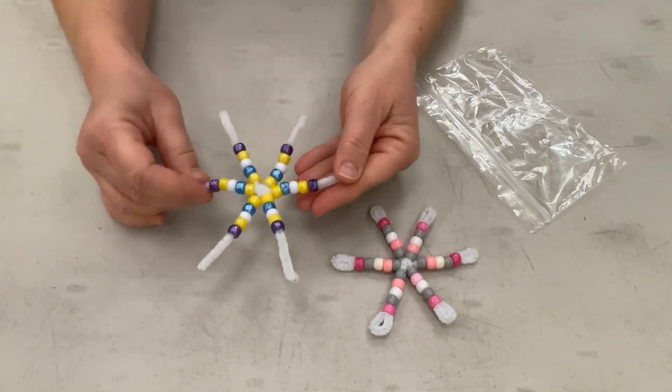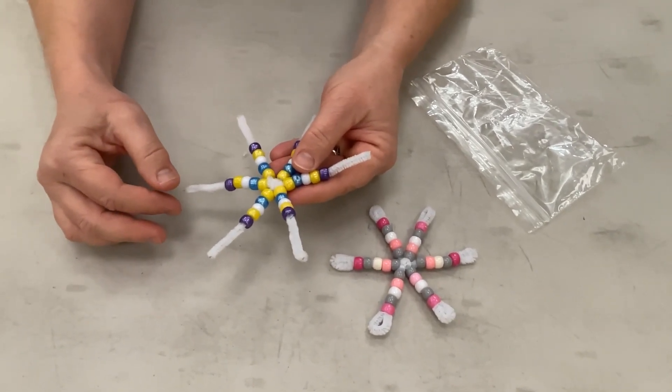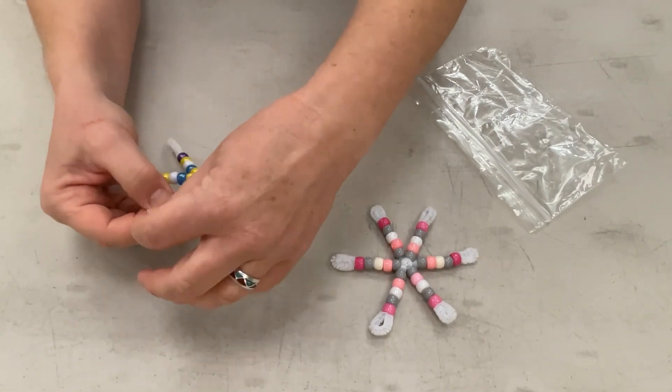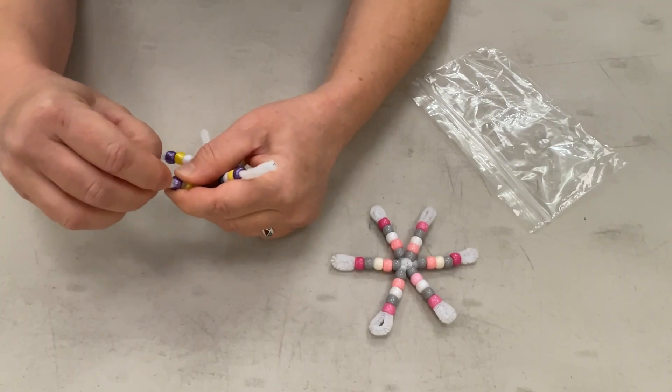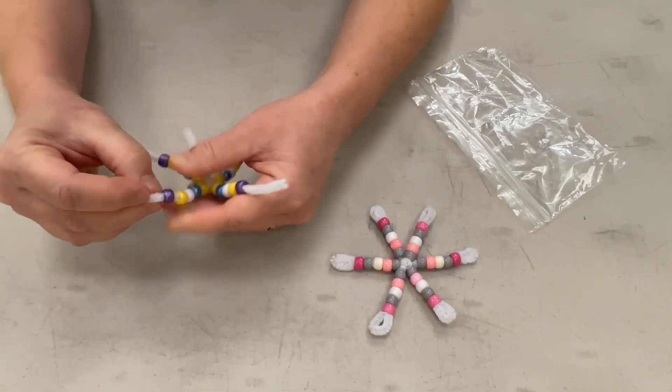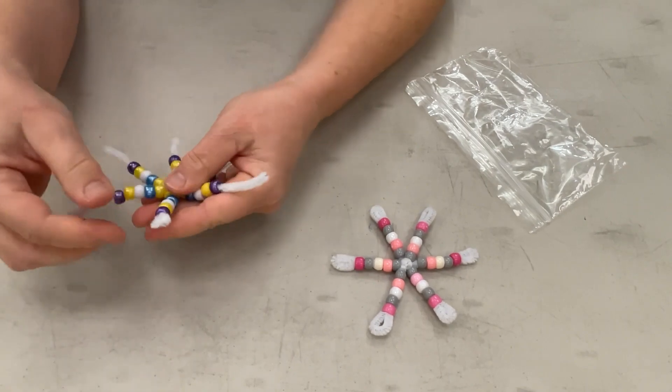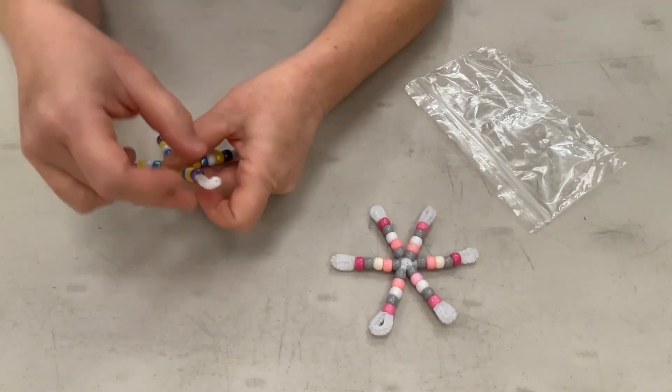All right, now that we've added our beads, we need to tie off the end so that the beads don't fall off. And basically what you're going to do is just hold the end and twist it down, forming a little bit of a circle and then inserting that end back into the bead. That creates a little knot that will stop the beads from falling off.